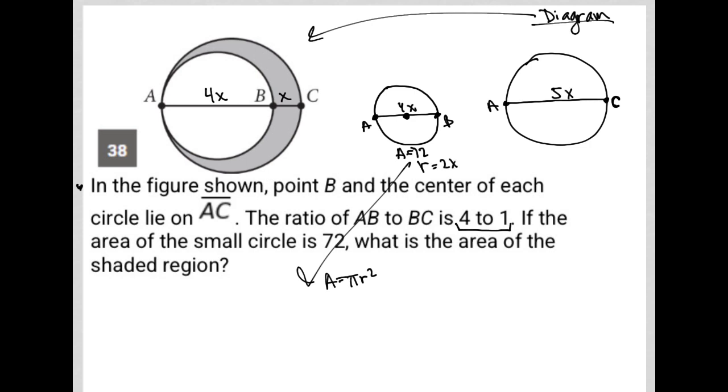So let me plug all that stuff in. So A is 72 equals pi, R is 2X squared. This becomes 72 equals 4 pi X squared. You can divide both sides by 4. 4 goes into 72, 18 times. So it becomes 18 equals pi X squared. And I'm going to leave it there for now.